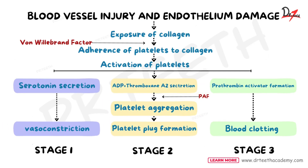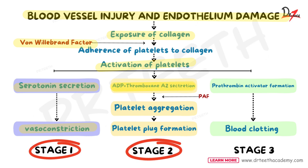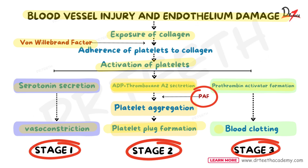Look at this flowchart. Whenever we have blood vessel injury and endothelium damage, there is exposure of collagen. The platelets adhere to the exposed collagen, accelerated by von Willebrand factor. Once platelets adhere, they get activated and three stages begin. In stage one, serotonin secretion causes vasoconstriction. In stage two, ADP and thromboxane A2 secretion, accelerated by PAF, leads to platelet plug formation. In stage three, formation of prothrombin activator leads to blood clotting.